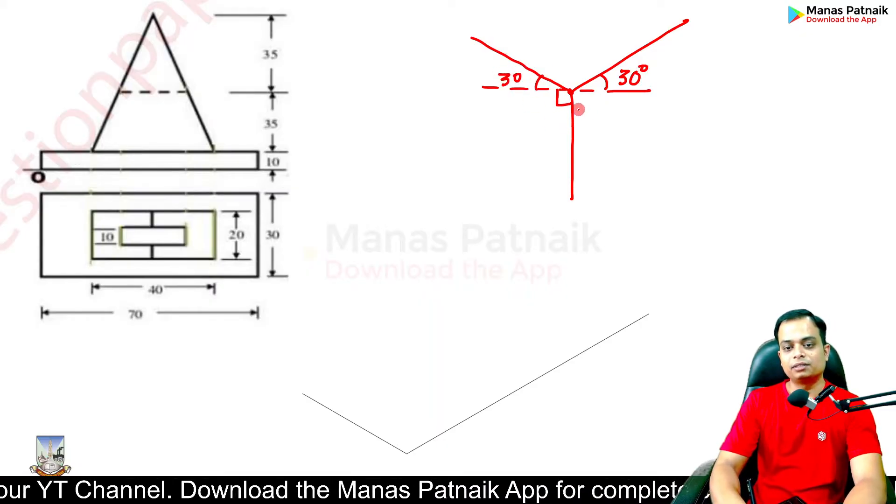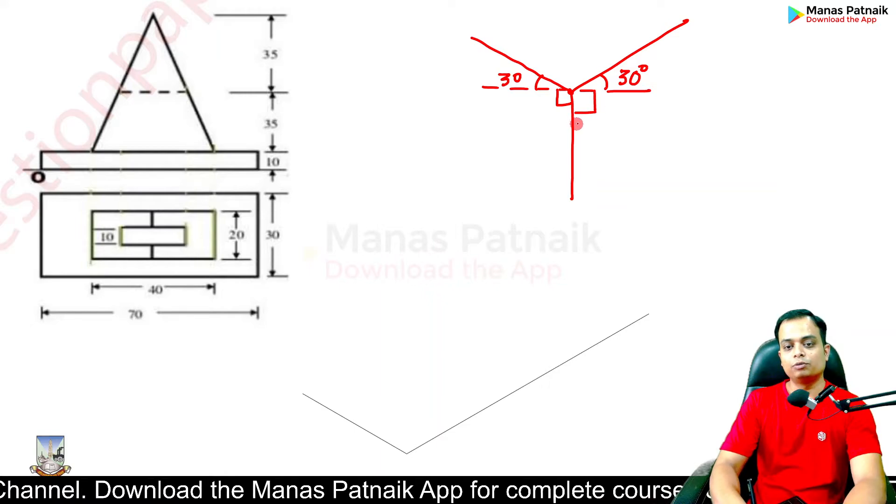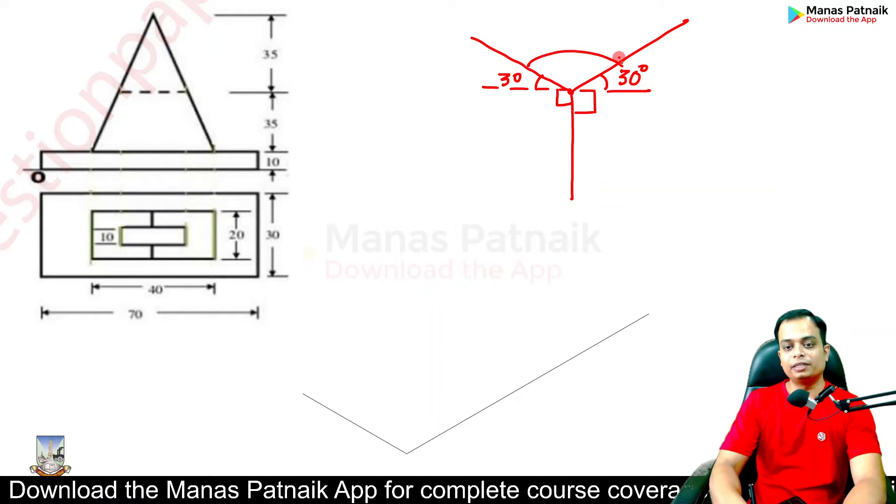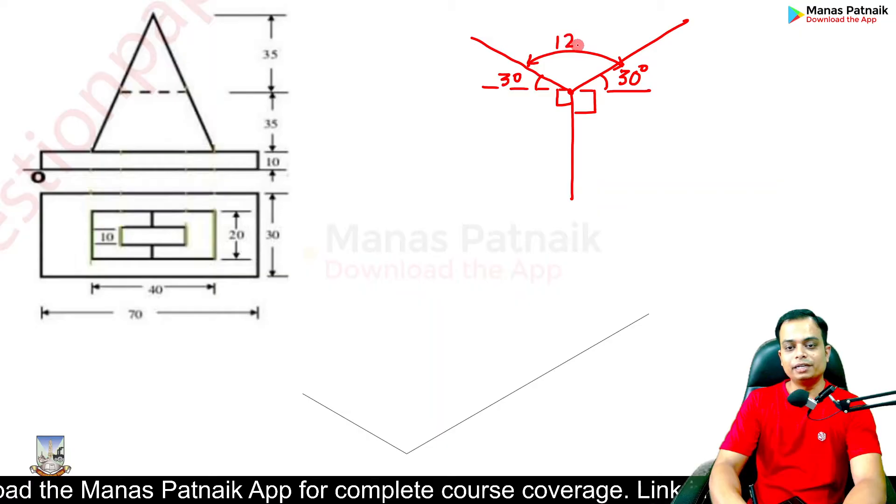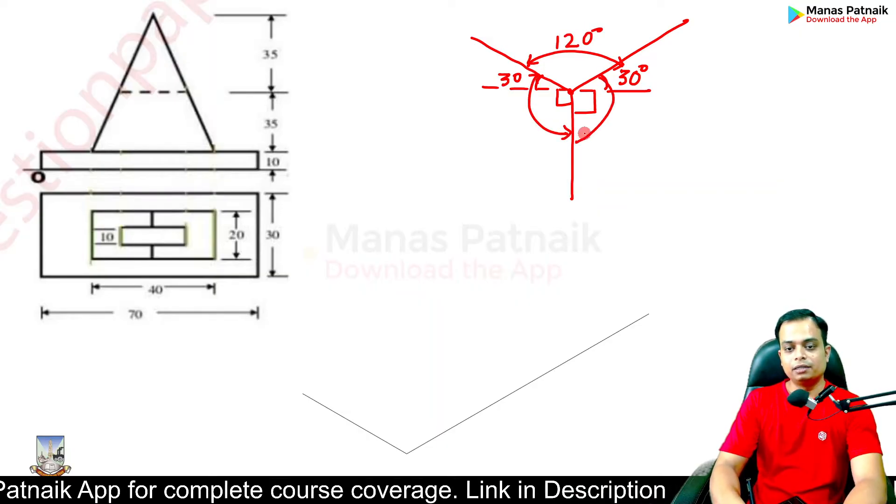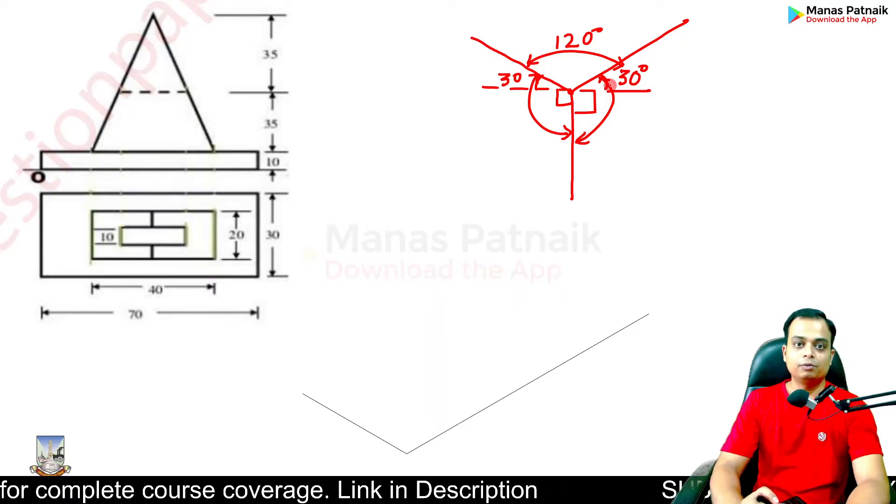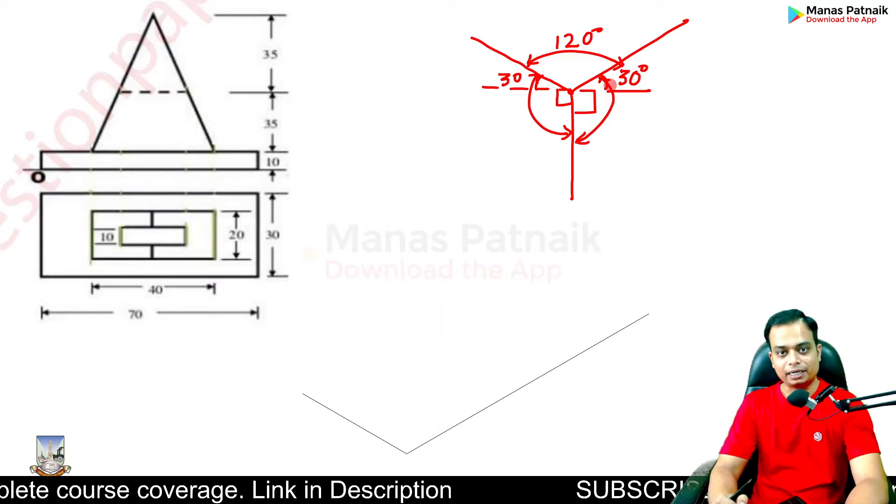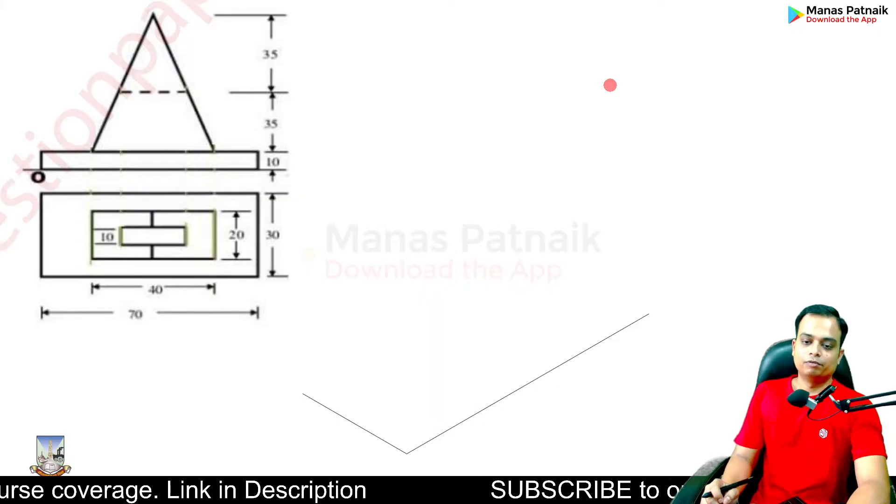When you do that, since this is 90, automatically this angle becomes 120 and this angle also becomes 120, and you are left with 120 degrees. So that's 120, this is also 120, this also is 120 degrees - so equal angle isometric, that's the meaning of the term.